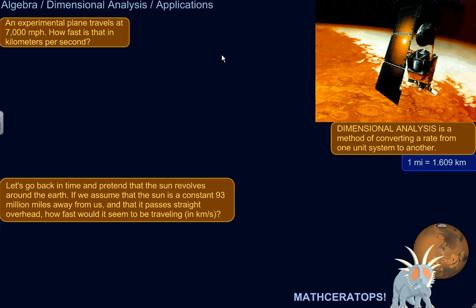This picture is of the Mars Climate Orbiter, which slammed into Mars in 1999 when it attempted to enter orbit. Upon investigation, it turned out that the software package handling its navigation dealt with force in Newtons, while the ground crew was using the pound-force unit, an imperial unit — different unit systems. There was miscommunication and the thing crashed. It's important to use the same unit system, and dimensional analysis is a way of converting a rate in one unit system into another.